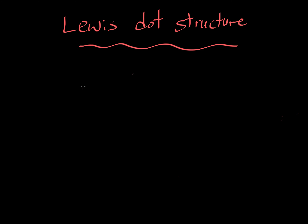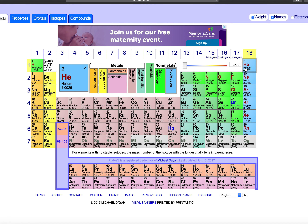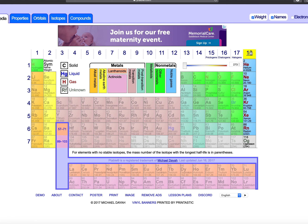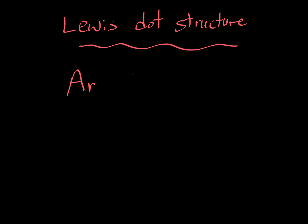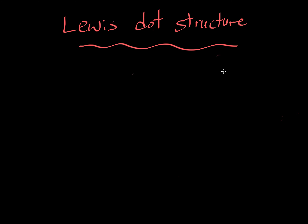Let's talk about argon, which is just Ar. Argon is a noble gas — it's in group eight, so it must have eight valence electrons around it. Since there's no attachment, just put one, two, three, four, five, six, seven, eight electrons around it, and it's happy. It's a noble gas, so it doesn't want to react, and this is its Lewis dot structure. The octet rule is fulfilled too.